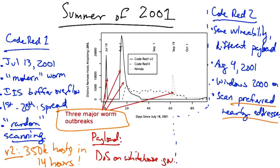The scan actually preferred nearby addresses. It would choose addresses from the same /8 with probability 1/2, from the same /16 with probability 3/8, and randomly from the entire internet with the remaining 1/8 probability.